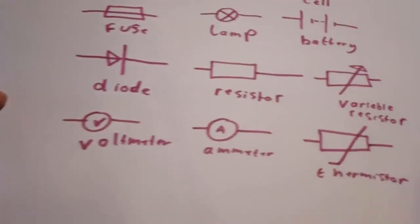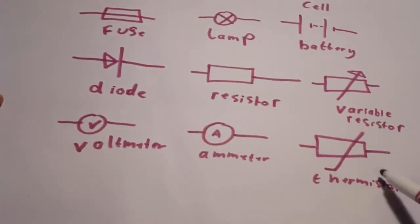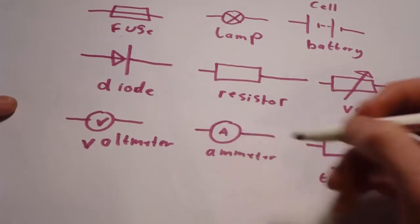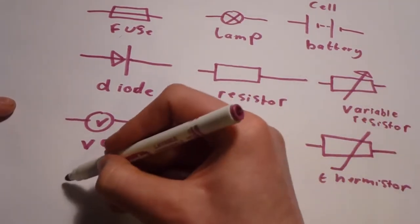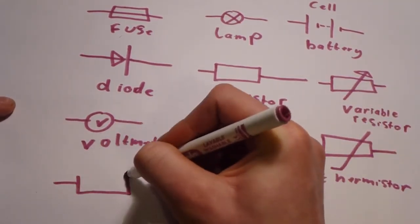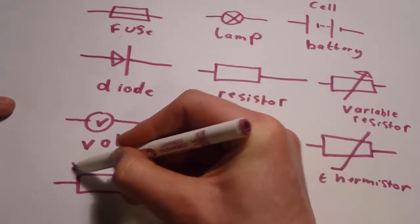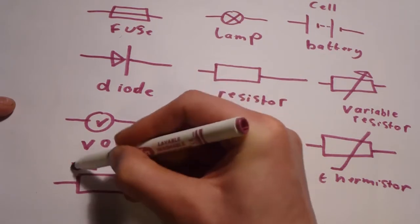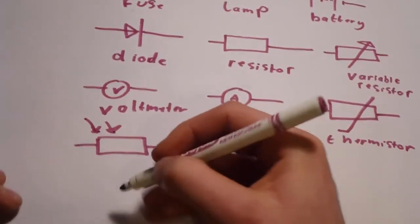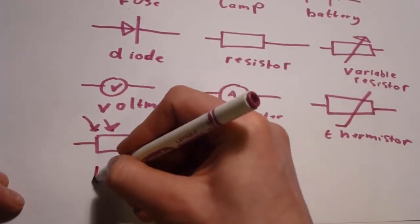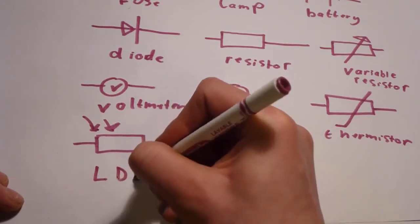After the thermistor, we have an LDR, which is another resistor affected by light. You have the arrows coming in, which represent light. LDR stands for light-dependent resistor.